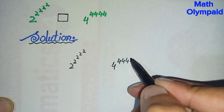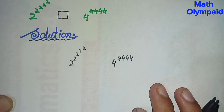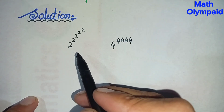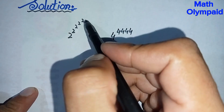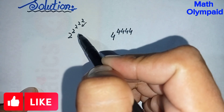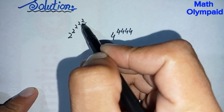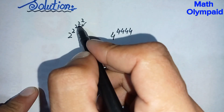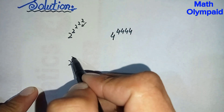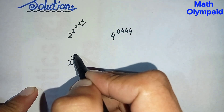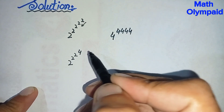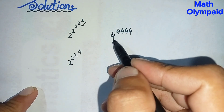We will prove which number is greater and which is smaller. First, on the left hand side, we will simplify the exponents from top to bottom. We will simplify 2 raised to power 2, which equals 4, and replace it. So it becomes 2 raised to power 2 raised to power 2, and this 2 raised to power 2 is 4 because 2 times 2 is 4.